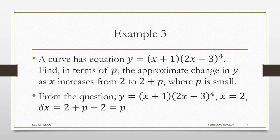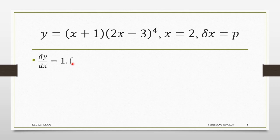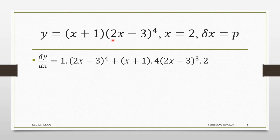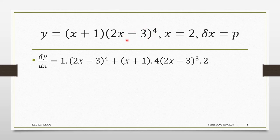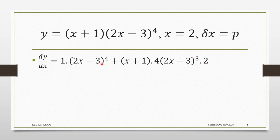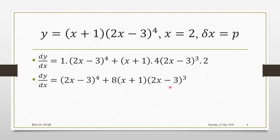Let's work with it. We will differentiate this, but be careful — this is a product, so we use the product rule. We keep the first term and differentiate the second, which gives 1. Then we keep the second term and differentiate the first, applying the chain rule: differentiate the outer bracket to get 4, bring it down, keep the inner expression to the power 3, then differentiate the inside (2x − 3) to get 2. Cleaning this up gives us the simplified dy/dx expression.